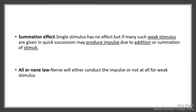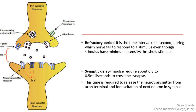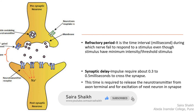The next property of nerve fiber is the summation effect, that is the addition effect. A single weak stimulus does not produce impulse formation, but if such weak stimuli come quickly one after another, they may produce the impulse due to addition. The next property is the refractory period — it is a time interval in milliseconds during which the nerve fails to respond to a stimulus even if the stimulus has minimum or threshold intensity. The next property is synaptic delay: the impulse requires about 0.3 to 0.5 milliseconds to cross the synapse, which is the time required to release the neurotransmitter from the axon terminal and for excitation of the next neuron.